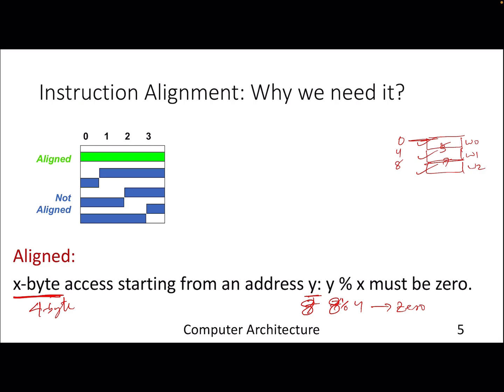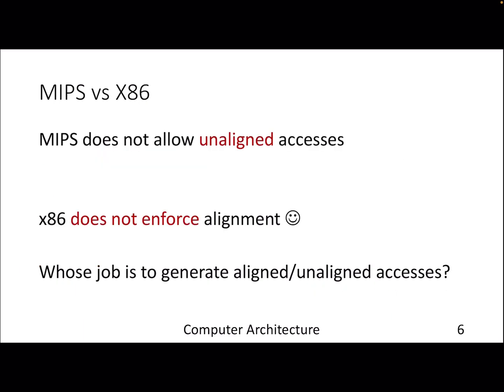What's the utility behind this concept of alignment? MIPS doesn't allow unaligned accesses, that's why you are getting that error in the lab, but x86 doesn't enforce. Before we jump into the utility of aligned accesses, you should know that it's the compiler who generates the aligned or unaligned accesses because based on that, finally you will end up accessing specific addresses.